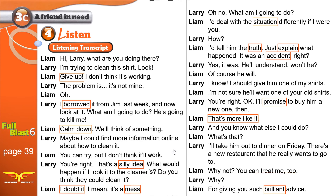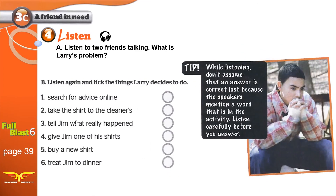Now, let's get back to the actions. Which ones did Larry decide to do in the end? Search for advice online? No — he thought it's a bad idea, a silly idea. Take the shirt to the cleaners? No — he thought they would not be able to clean it. Tell Jim what really happened? Yes — just go to Jim, tell him the truth. Give Jim one of his shirts? No — his shirts are old and the idea will not work. Buy a new shirt for Jim? Yes — that's more like it. Treat Jim to dinner? Yes — he would take Jim to dinner.